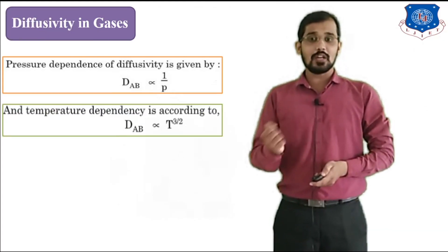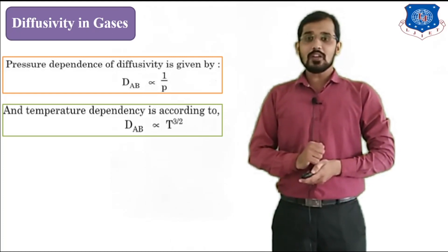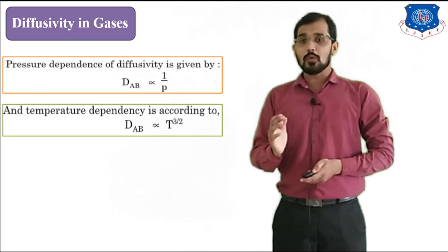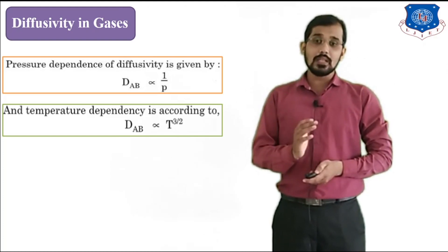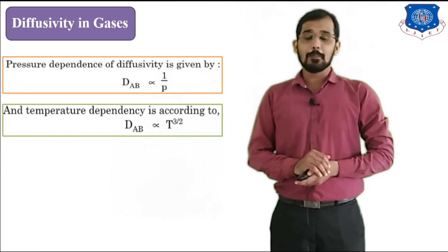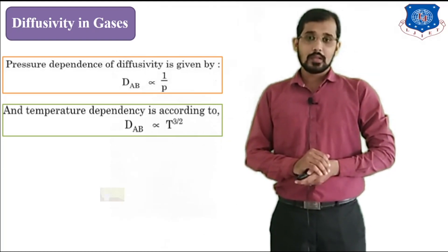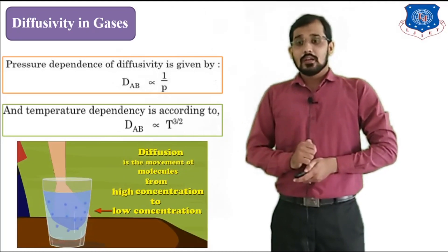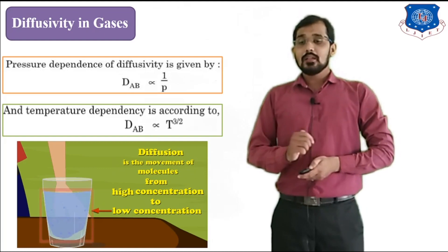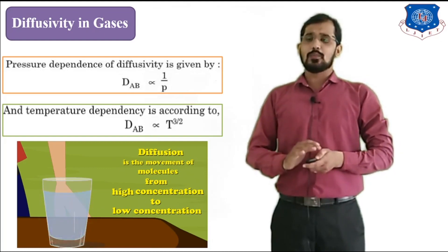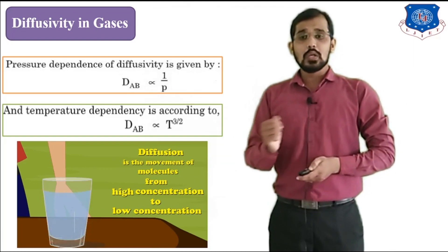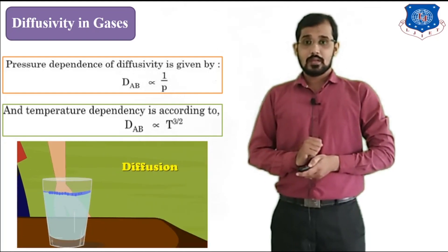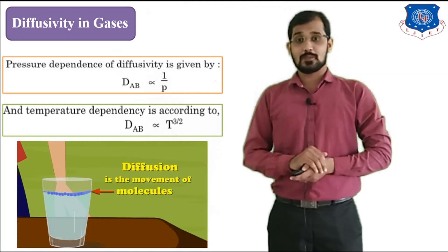Now we will see temperature dependency. DAB, the diffusion of component A with respect to B, is directly proportional to temperature raised to 3/2. The figure for diffusion shows transfer of molecules from the higher concentration region to the lower concentration region. This is diffusion, and diffusion is a part of mass transfer.